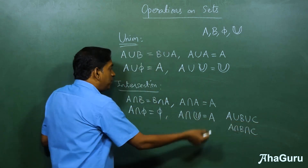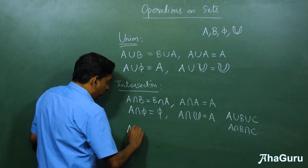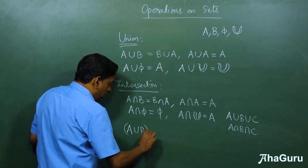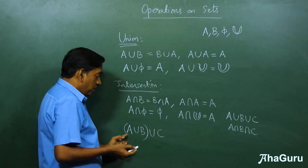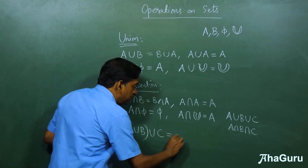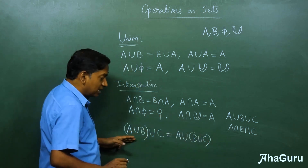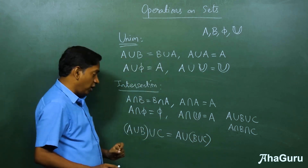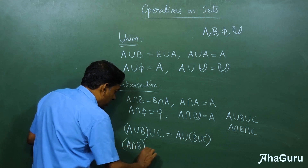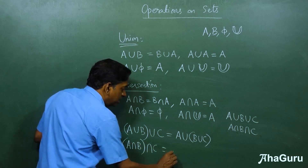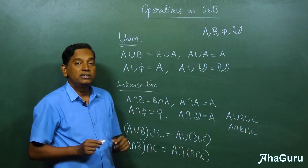Some properties that come with more than two sets: if you do A union B union C, you need to know which to do first. But A union (B union C) equals (A union B) union C — this is the associative law. The earlier property A union B equals B union A is the commutative law. Similarly for intersection, (A intersection B) intersection C equals A intersection (B intersection C).